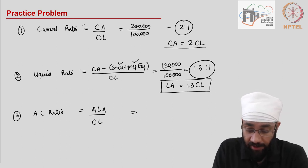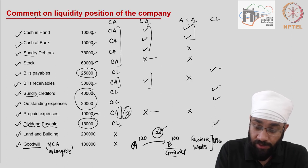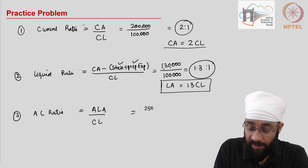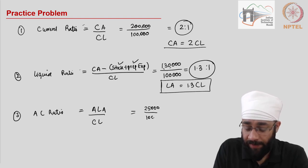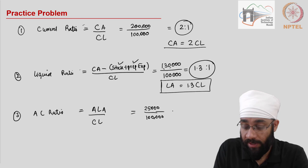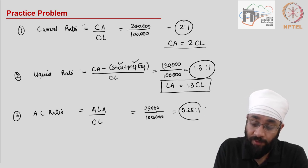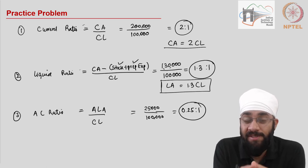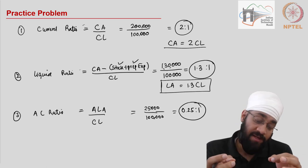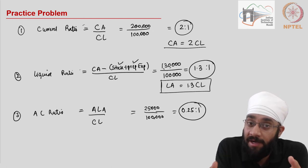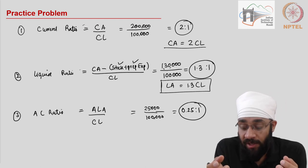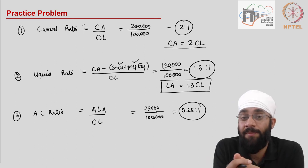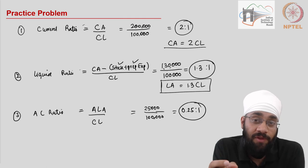For the absolute liquid ratio, only cash and bank balance are included, totaling 25,000. Dividing 25,000 by current liabilities of 1 lakh gives a ratio of 0.25:1. This means if the company had to pay its current liabilities right away using only cash and bank balance, it could not meet them — it only has one-fourth of what is needed and would be unable to pay 75% of its current liabilities.